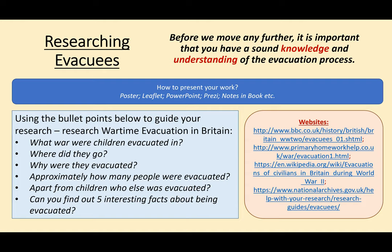Using the bullet points on the screen, I want you to research wartime evacuees and the evacuation process in Britain, and I want you to look at these questions: What war were children evacuated in? Where did they go? Why were they evacuated? Approximately how many people were evacuated? Apart from children, who else was evacuated? And finally, can you find out five interesting facts about being evacuated? What you see in that light blue box is just some questions to prompt your thinking — that is not an exclusive list. If you'd like to find out more information, that's wonderful. In the peachy box on the right-hand side, you will see a list of websites you can follow to find information about evacuation in Britain, so please do follow those links.